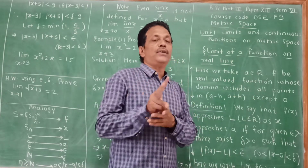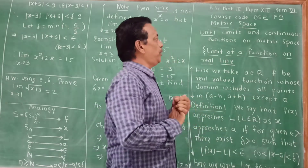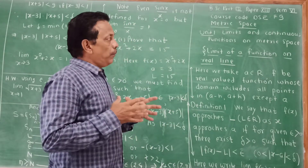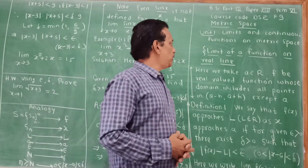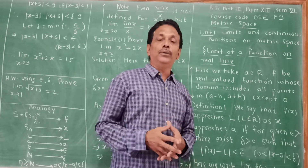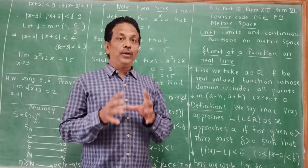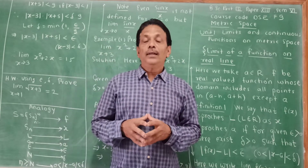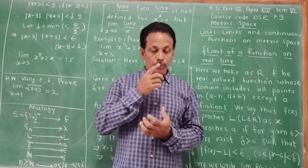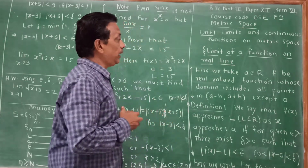There are two units. Unit 1 is limits and continuous functions on metric space. But before starting metric space, first we must know about what is the limit and what is a continuous function as far as the real line is concerned. Therefore, this article is about the limit of a function on the real line.